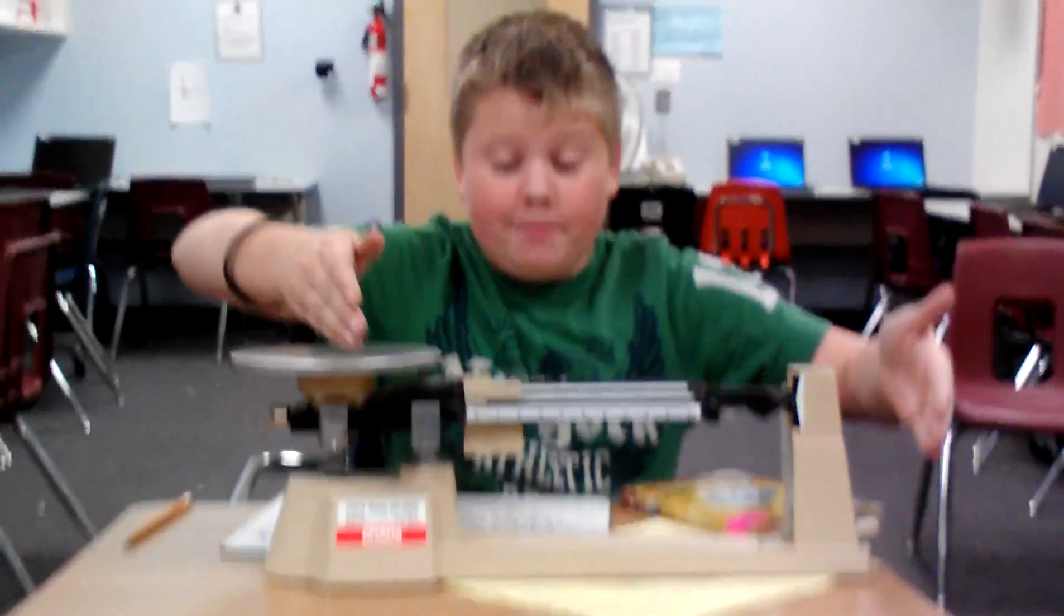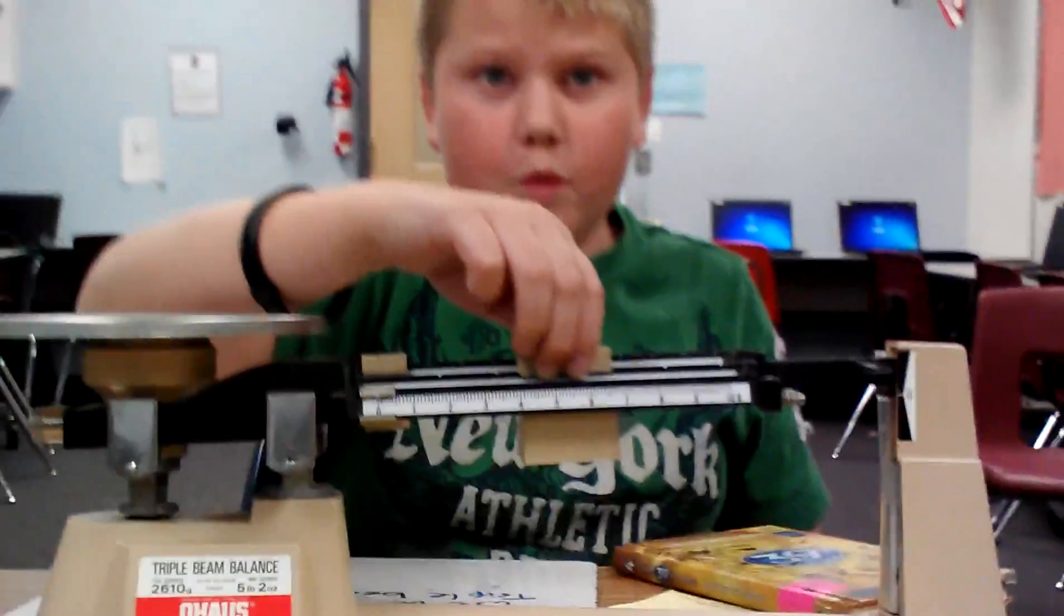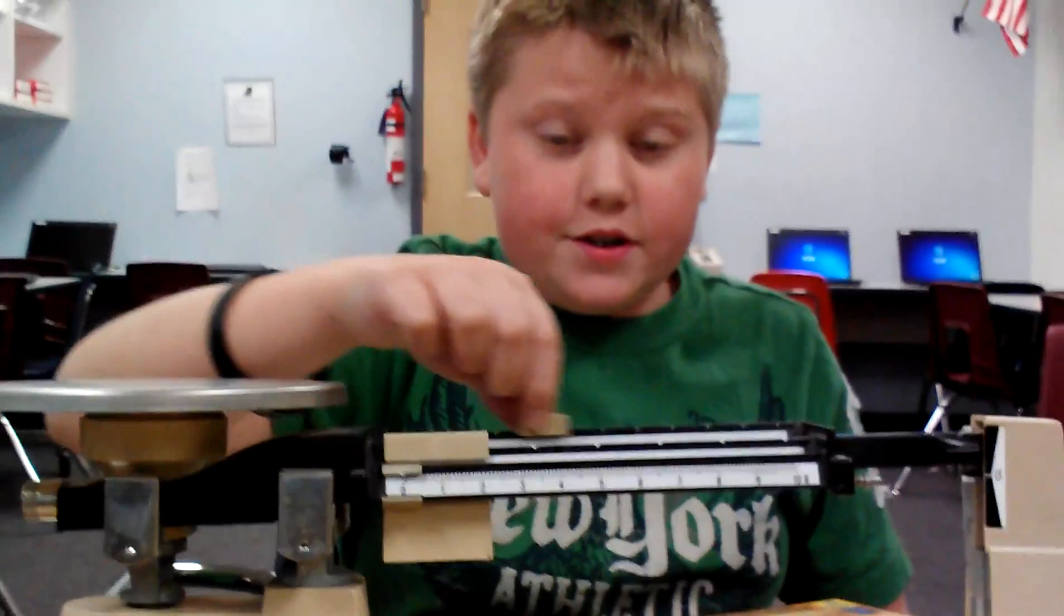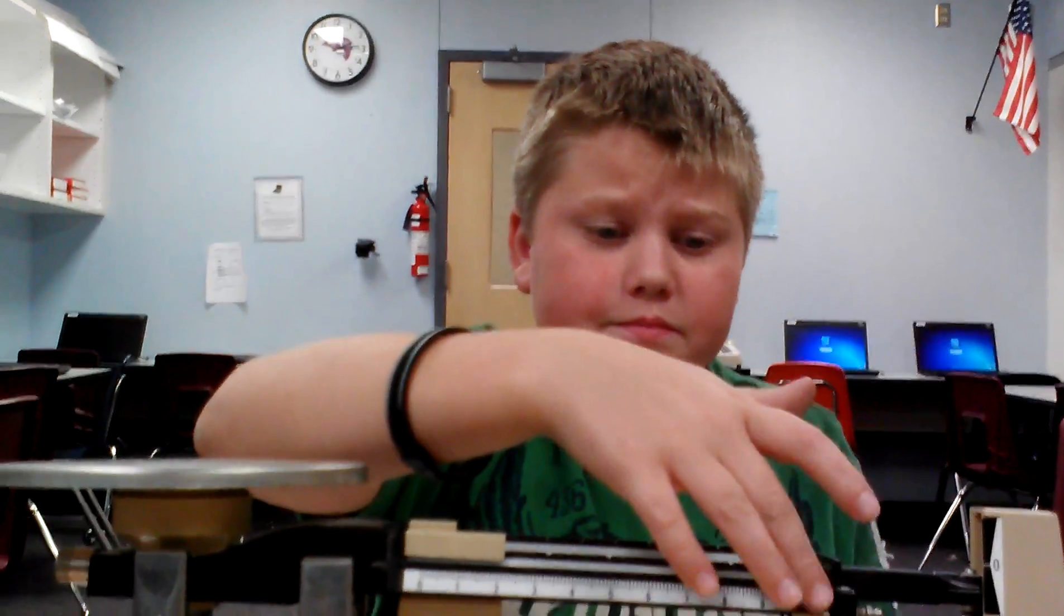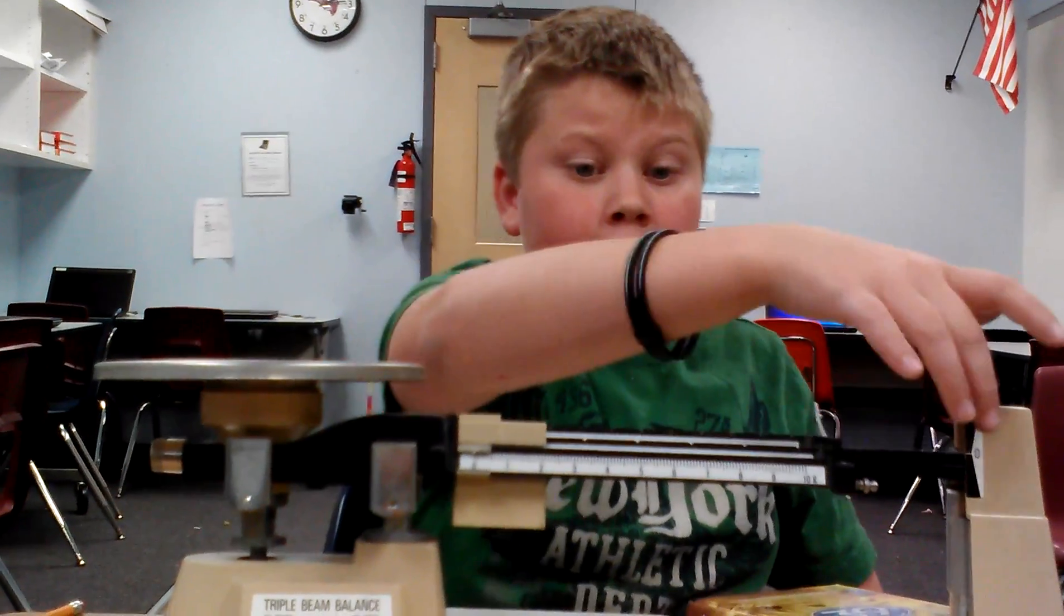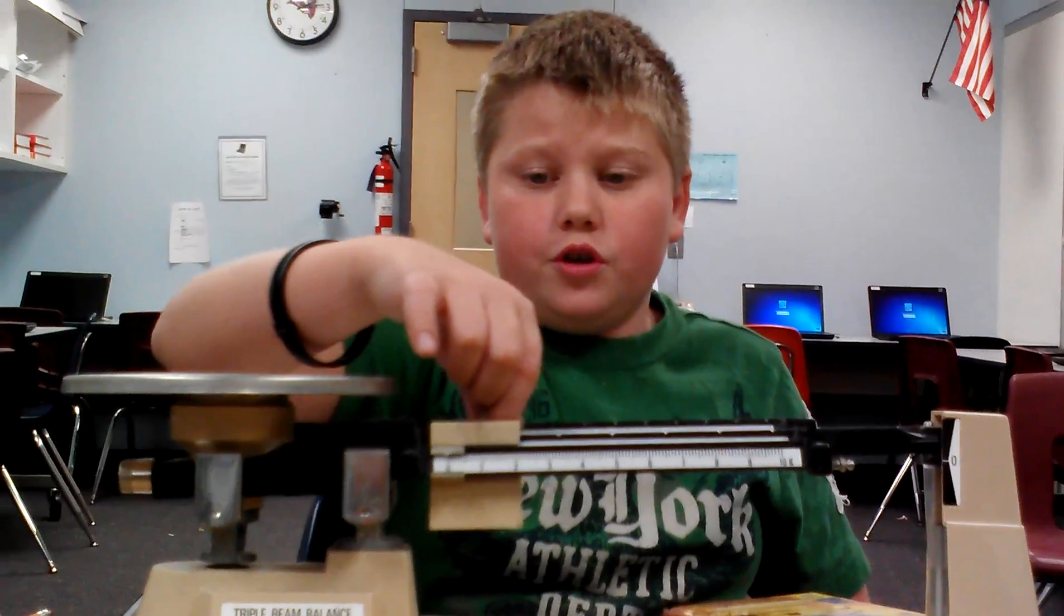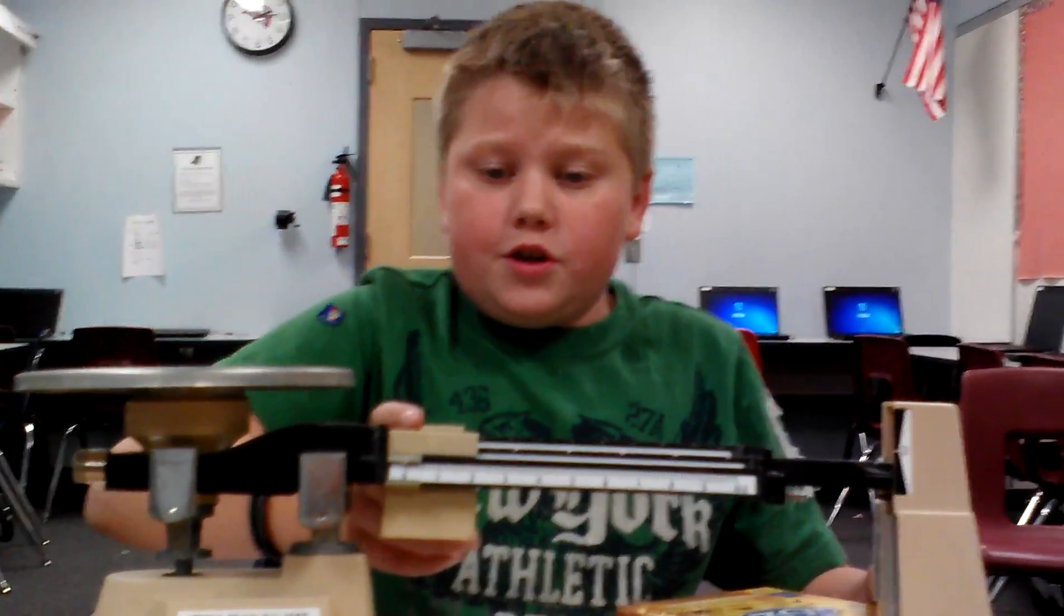This is a triple beam balance. What it does is you have hundreds weights, tens weights, and ones weights. And what that does is once you place your object on here and line it up with zero, what you have to do is you have to move these so you can get the exact object. To show you how you can move this to line it back up with zero, Kelly is going to show you how you do that.